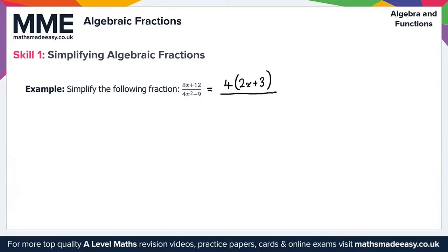Now looking at the denominator, 4x squared minus 9. We can use the numerator to give us a clue — we need to obtain either a 4 or a (2x plus 3) in the denominator. Notice that 4x squared minus 9 is the difference of two squares, so it factorizes as (2x plus 3)(2x minus 3).